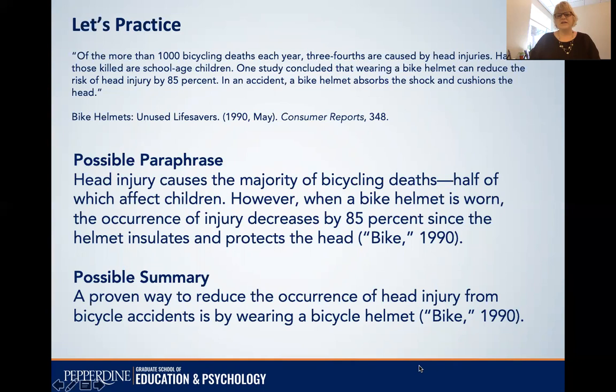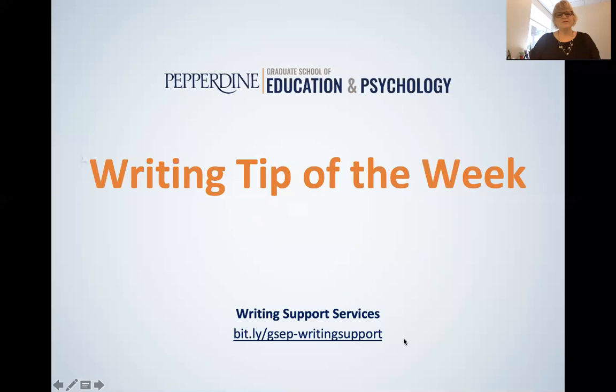For the summary, I focused on what I felt was the most important information — that head injury from bicycle accidents can be reduced by wearing a helmet — and condensed it into one sentence, which is much shorter. But I still included my citation. That's all for this week's writing tip. Good luck with your paraphrasing, and always feel free to get in touch for writing support. Happy writing!